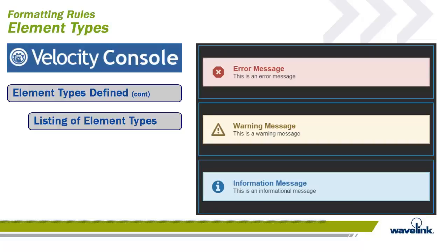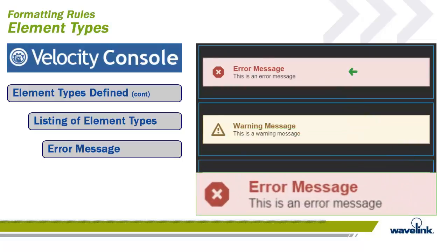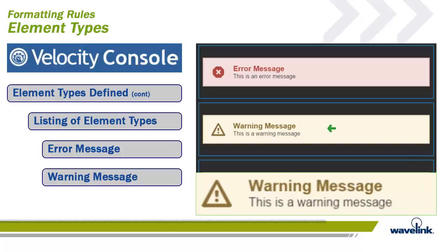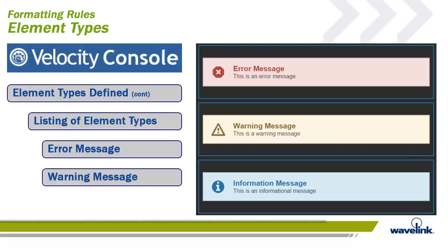The message element has three different message types. First is the error message. It defaults to red and will look for the word 'error' in the message, giving the appearance that the message is quite important and the user should take heed. Next is the warning message. It defaults to yellow and is a message the user should be aware of but may not stop the process from moving forward.